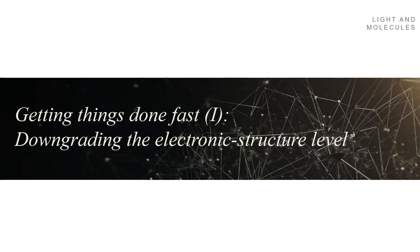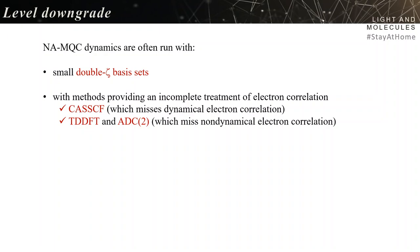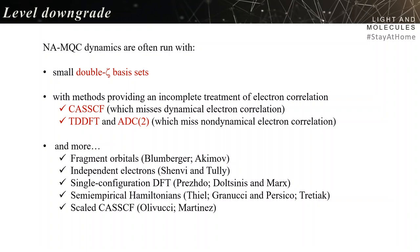What's the implication of that? Non-adiabatic mixed quantum classical dynamics are often run with a small double-zeta basis set, with methods providing an incomplete treatment of electronic correlation — like CASSCF, which misses dynamic electron correlation, or TDDFT and ADC2, which miss non-dynamic electron correlation — and more: fragment orbitals, independent electrons, single-configuration DFT, semi-empirical Hamiltonians, scaled CASSCF, and the list goes on.